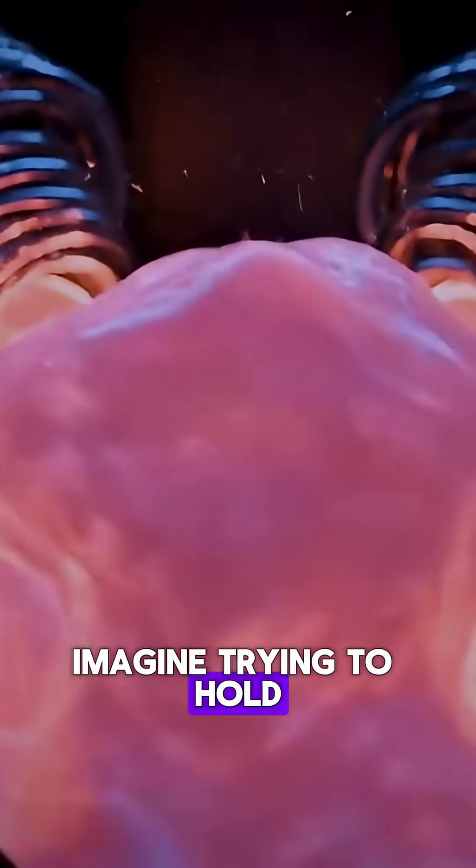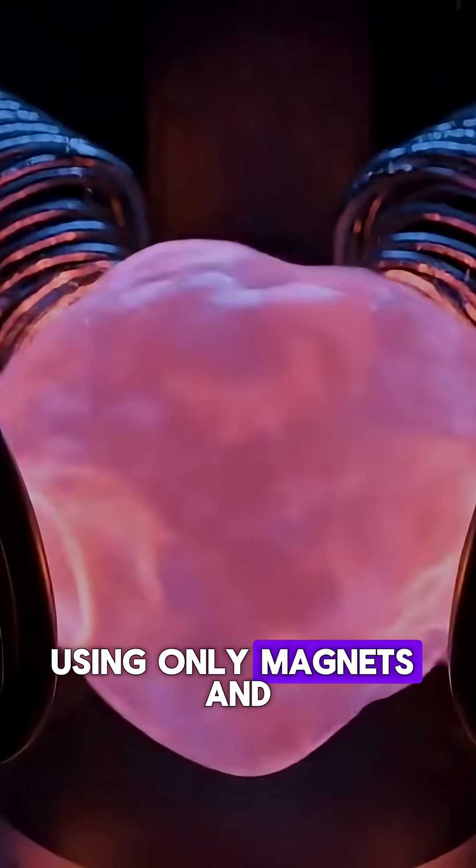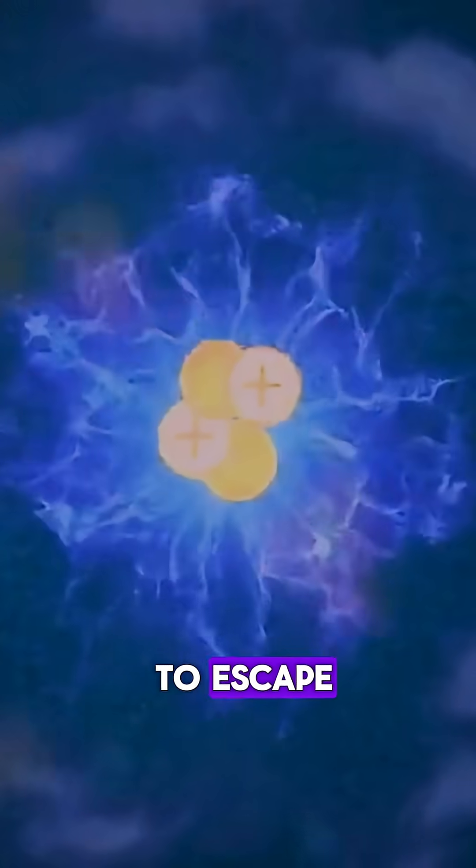Imagine trying to hold a blob of super hot jelly in place using only magnets. And this jelly is alive, constantly shifting and trying to escape. That's essentially the challenge of plasma confinement in a tokamak. The plasma is inherently unstable.